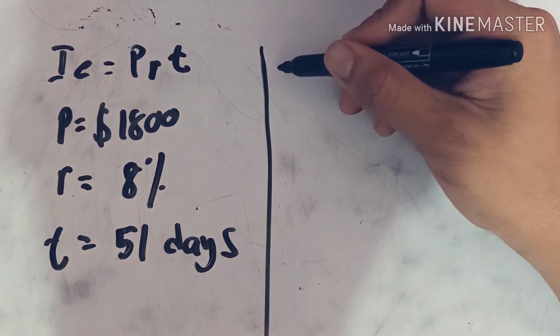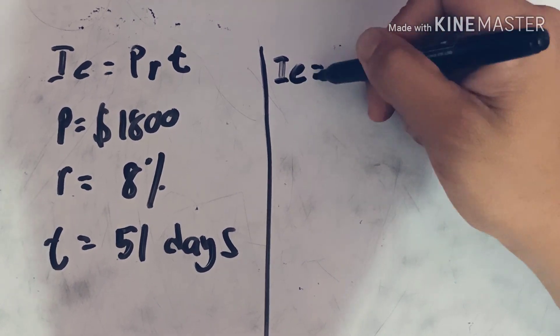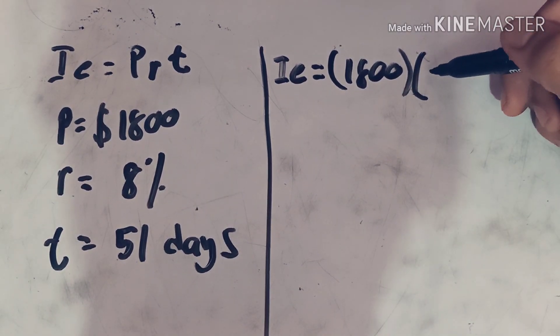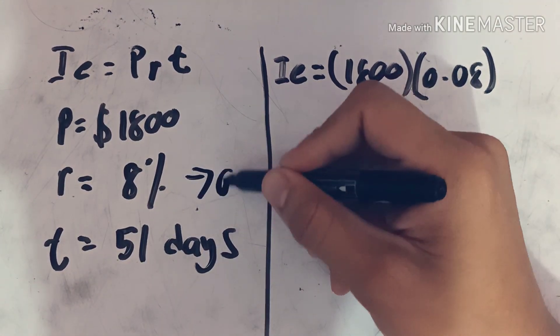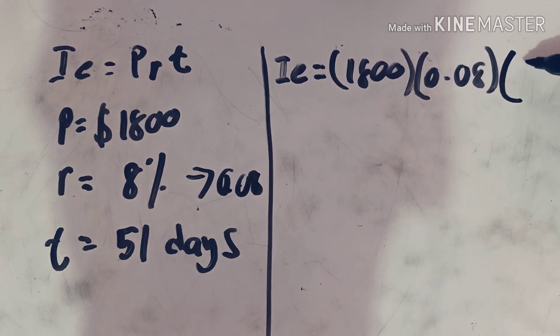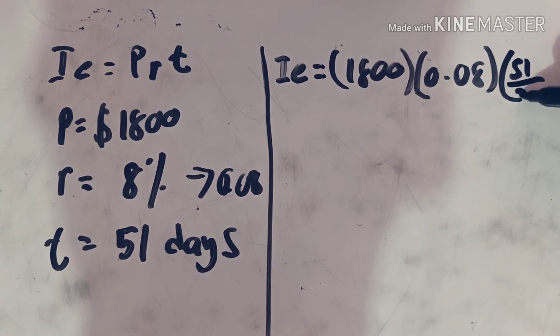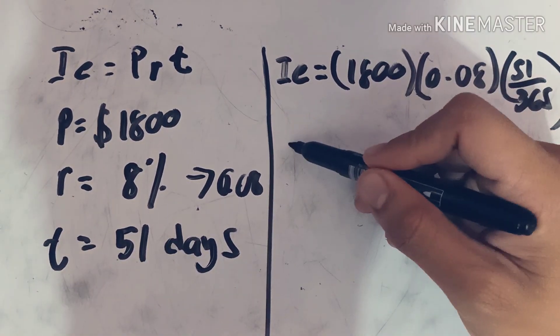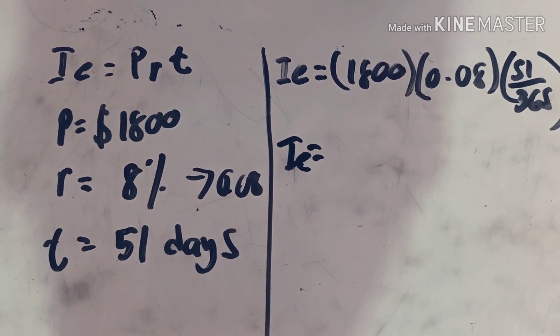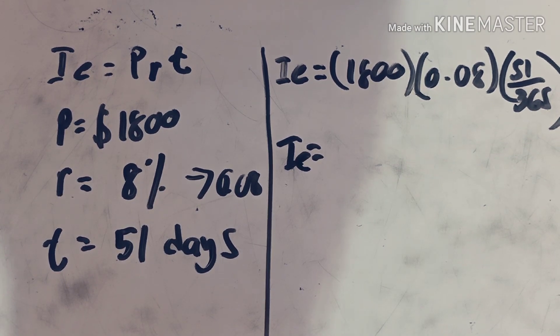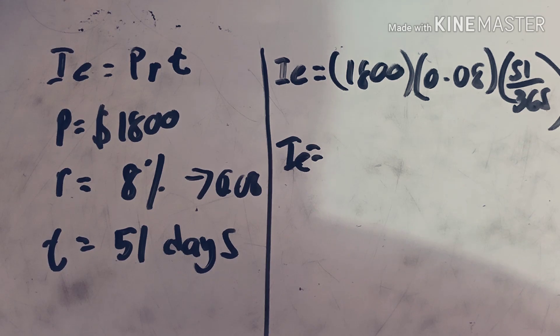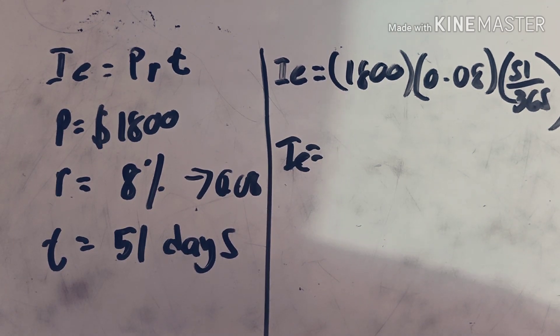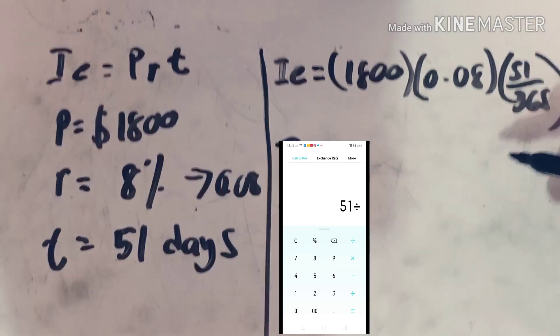Let's substitute the given value. Exact interest equals $1,800 multiplied by 8%, or in decimal form 0.08, multiplied by our time which is 51 days divided by 365 because we are looking for the exact interest. Let's divide 51 over 365. 51 divided by 365 is 0.14.